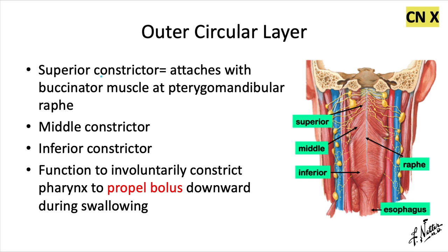Up here, we have the superior constrictor pharyngeal muscle, and that one attaches anteriorly with the buccinator muscle at the pterygomandibular raphe, and it attaches posteriorly with the other side — right and left — joined together along the pharyngeal raphe at the midline. And then we have the middle constrictor and the inferior constrictor down here. All three of these together function to involuntarily constrict the pharynx to propel a bolus of food downward during the swallowing process.